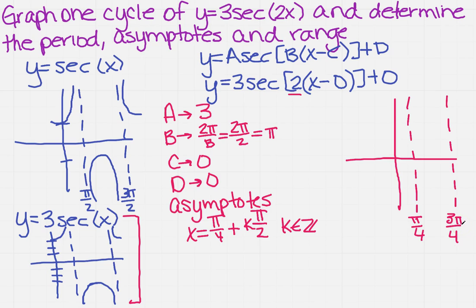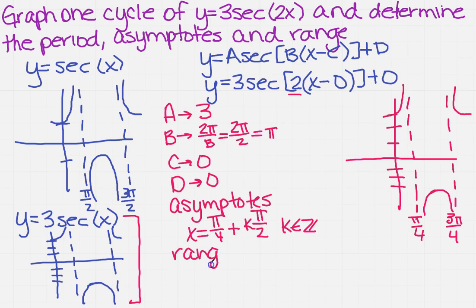Since the amplitude is 3, the graph intersects at 3 and comes down the same way, reaching negative 3 as well. The only thing left is the range. The range goes from negative infinity up to negative 3, or from 3 to positive infinity.